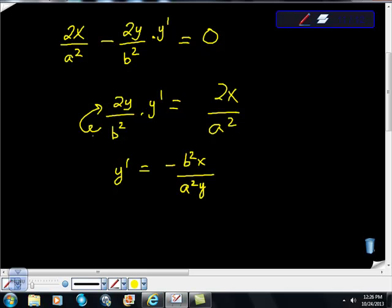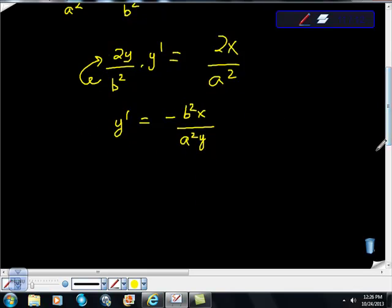negative b squared x over a squared y, a squared y. I just multiply this by that. So this is all pretty crappy looking,